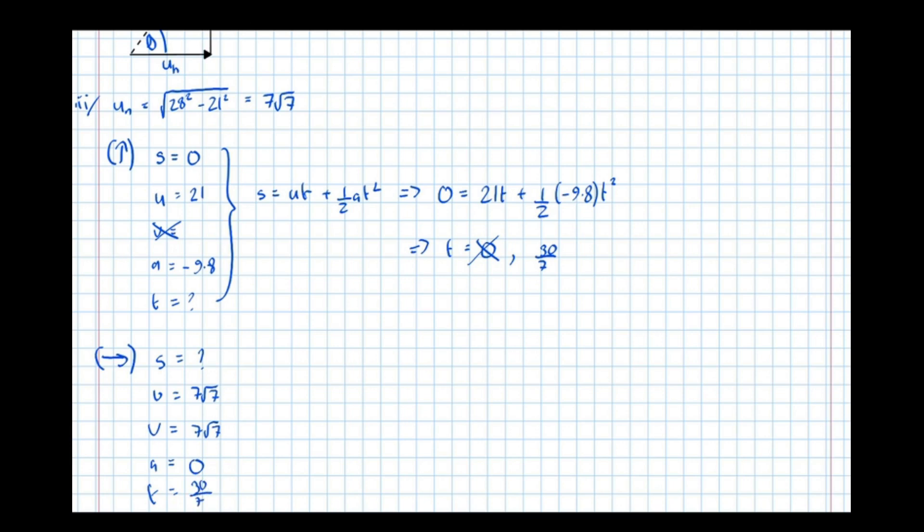So we've got a choice of equations here. I'm going to go for the easiest. I'm going to go for S equals U plus V over 2 T, which in this case is equal to 7 root 7 plus 7 root 7 over 2 times time, 30 over 7.